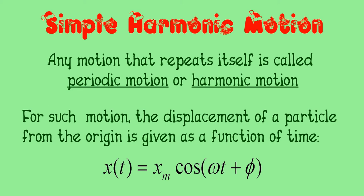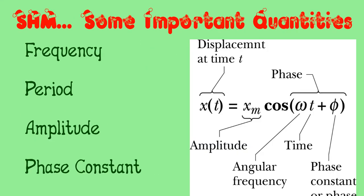Let's analyze that function a little bit more. Here are some of the important quantities that you see in that function. For starters, you notice that the function is for x(t), which means the displacement at a given time t.